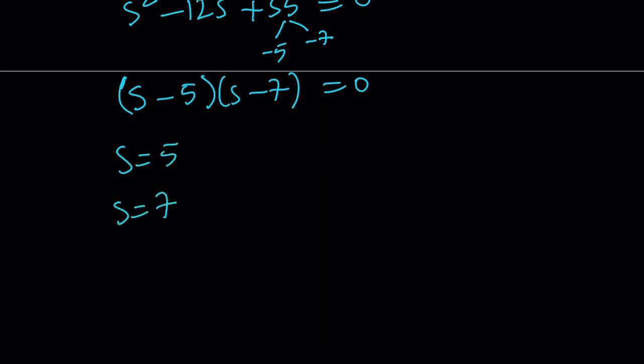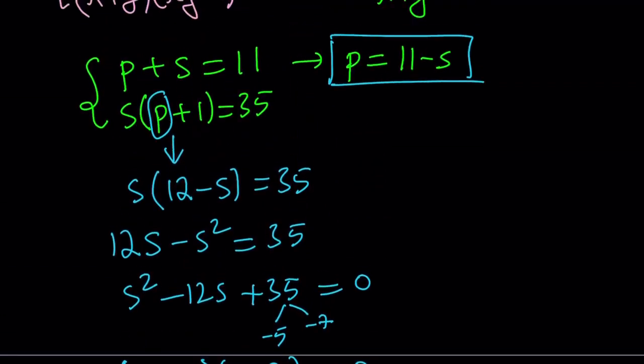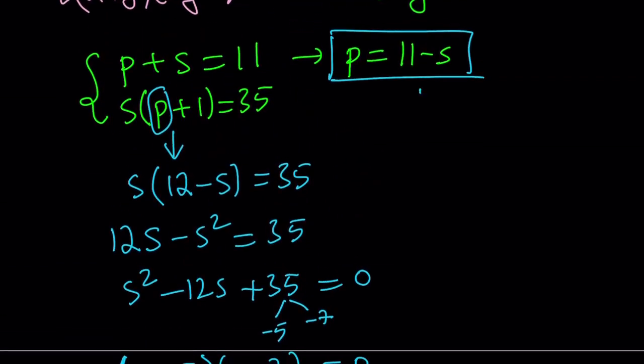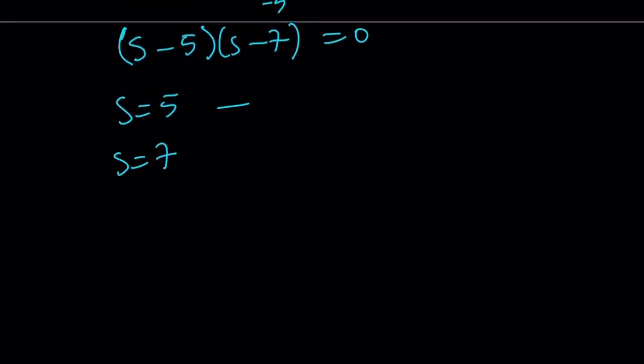Great. So we were able to find s, which means we can also find p from here because we know that s plus p is equal to 11. Or we can use this identity, p equals 11 minus s, which means if s is equal to 5, p is equal to 6. If s is equal to 7, p is equal to 4 because their sum always needs to be 11.